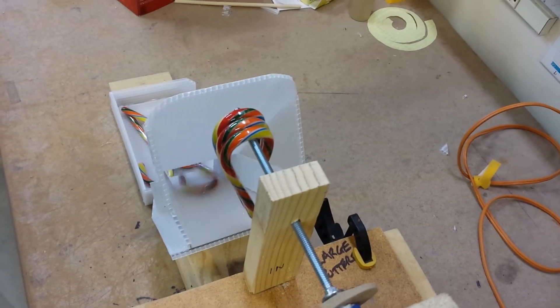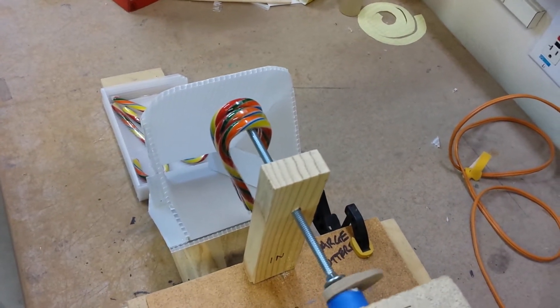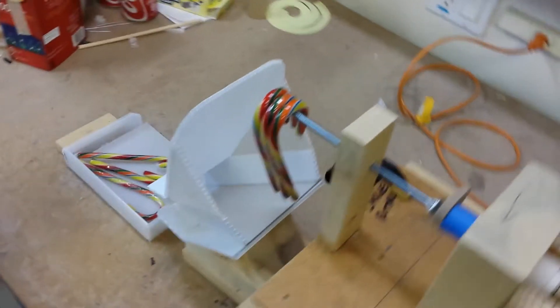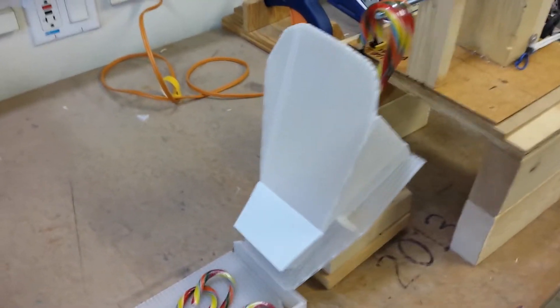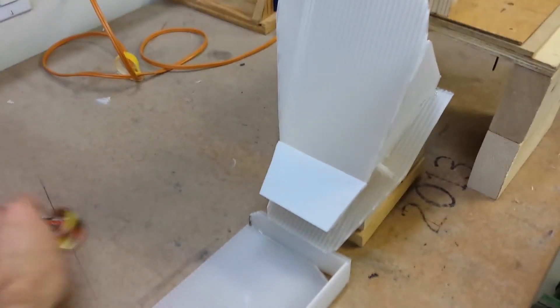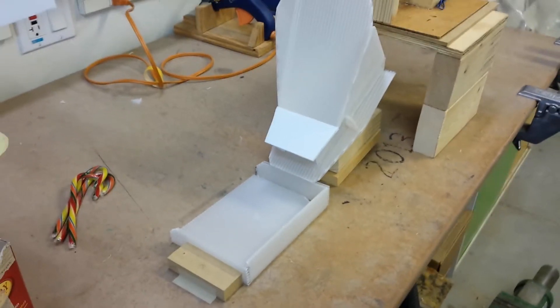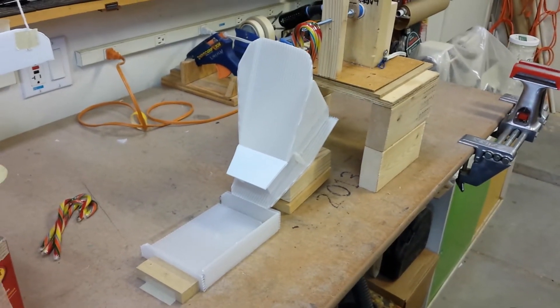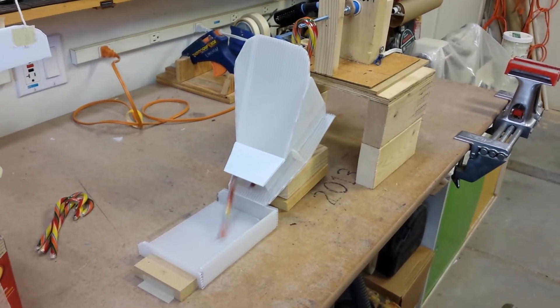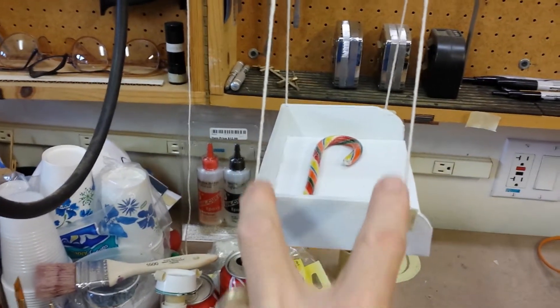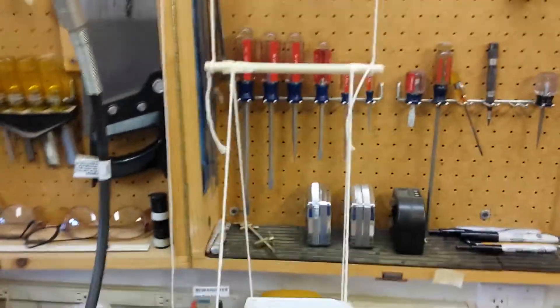Looking down the chute, the candy cane gets funneled and guided as it falls. As the next candy cane drops, it deposits right in the tray that would be between these two guy wires.